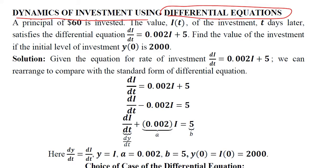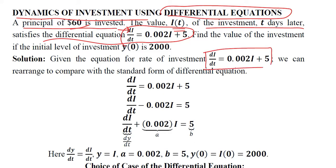So here we have the statement of this numerical. A principal of $60 is invested. We have the principal, that is the investment, and the value I(t), the investment is a function over time. t days later satisfies the differential equation. This is the rate of growth or change of investment over time. It is a first order differential equation. We are required to find the value of the investment if the initial level of investment is this. So we have the initial condition as well.